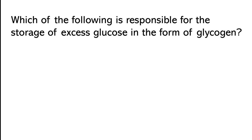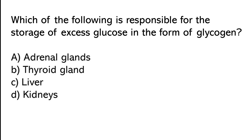Which of the following is responsible for the storage of excess glucose in the form of glycogen? Adrenal glands, Thyroid glands, Liver, Kidneys. So the correct answer is option C. Liver is responsible for the storage of excess glucose in the form of glycogen.